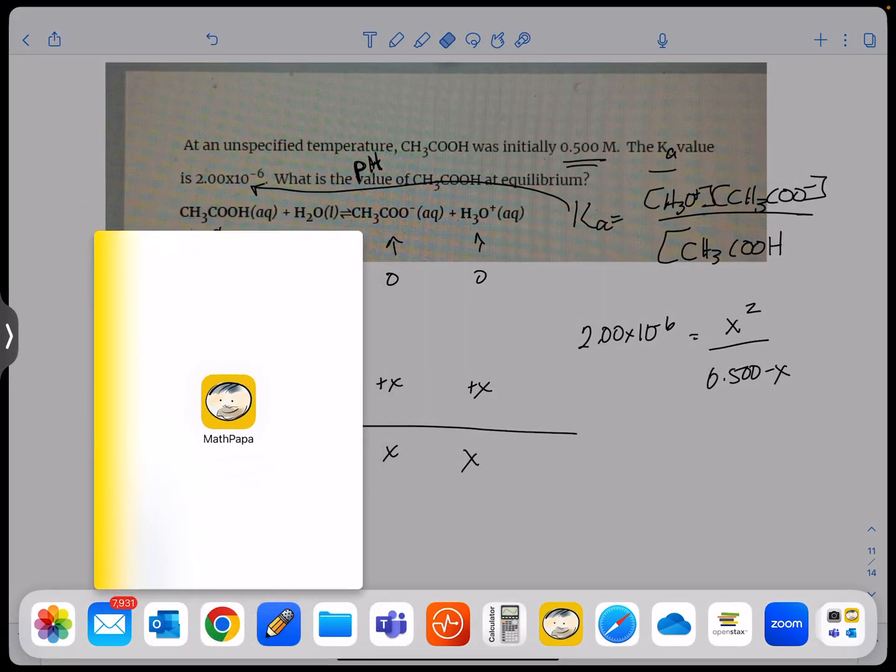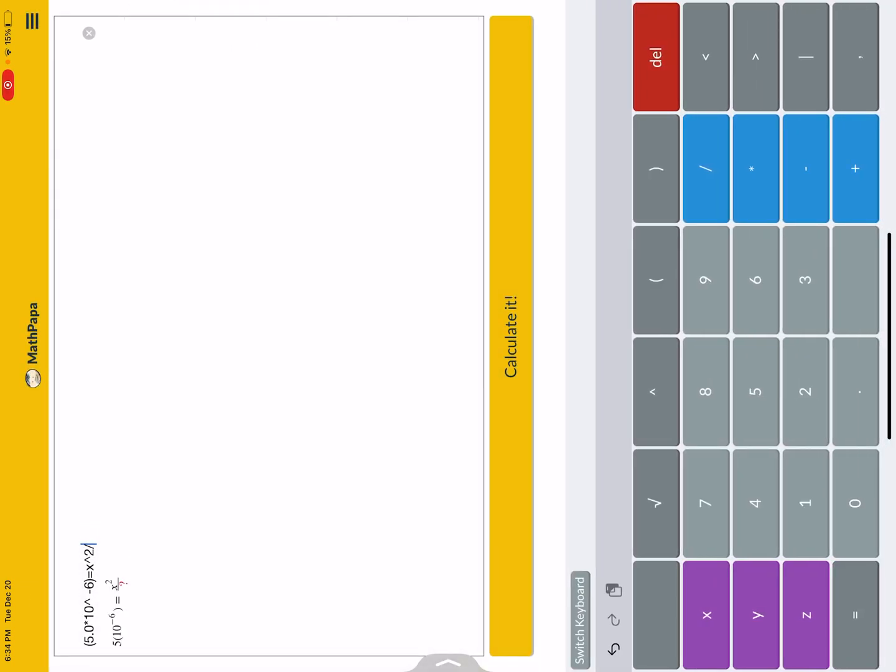So it always turns the screen in a weird way. I'm entering 2.0 times 10 to the minus 6th equals X squared divided by parentheses 0.500 minus X, close parentheses. That looks good.